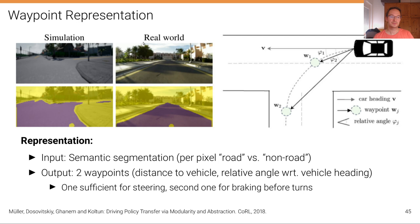The representation used is semantic segmentation as input, and the output consists of two waypoints: the first waypoint and the second waypoint. One waypoint is sufficient for steering, and the second is used for braking before turns. A PID controller then tries to follow the lane or road based on these waypoints.